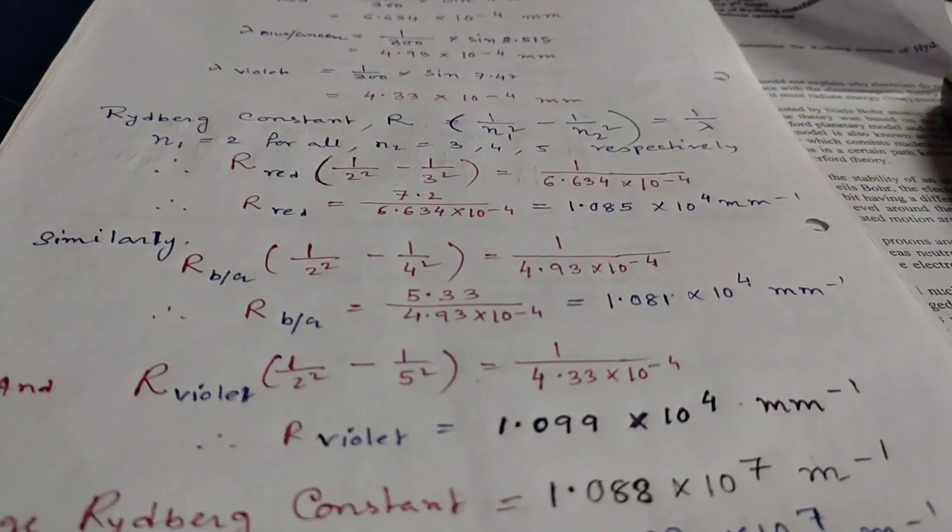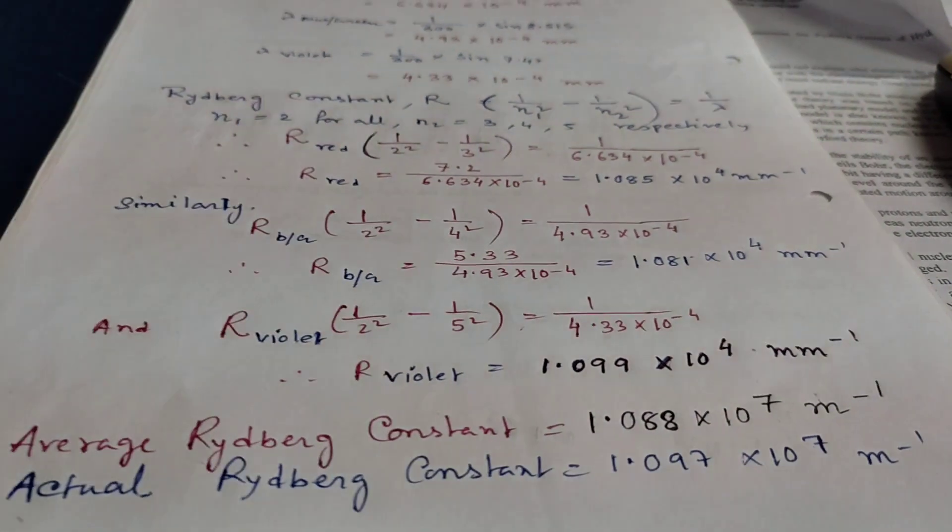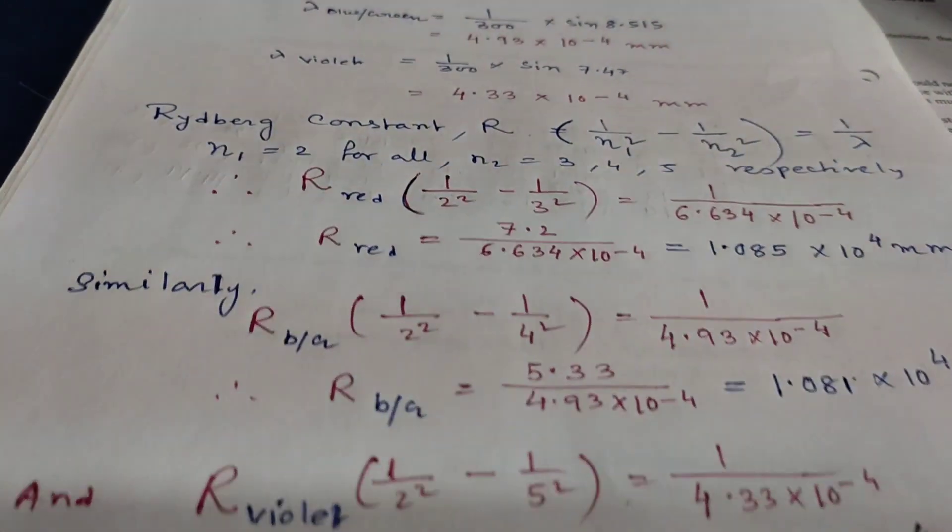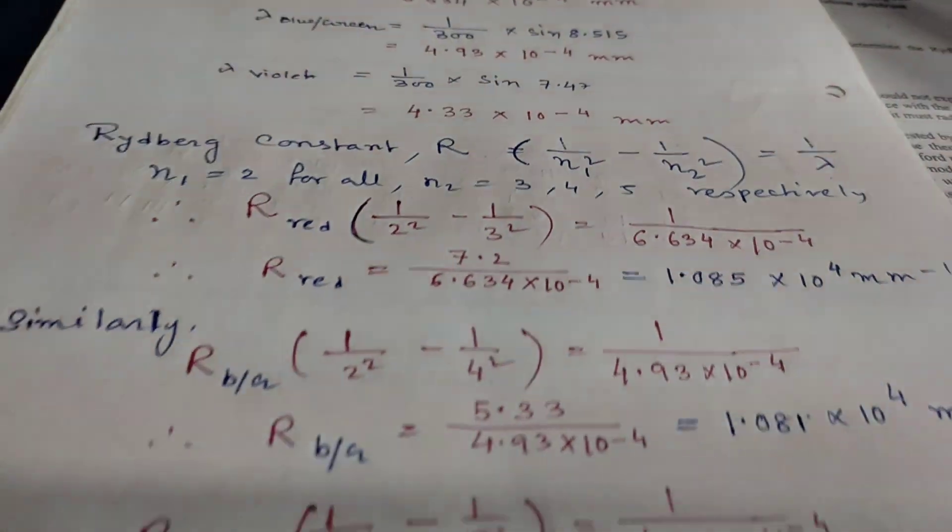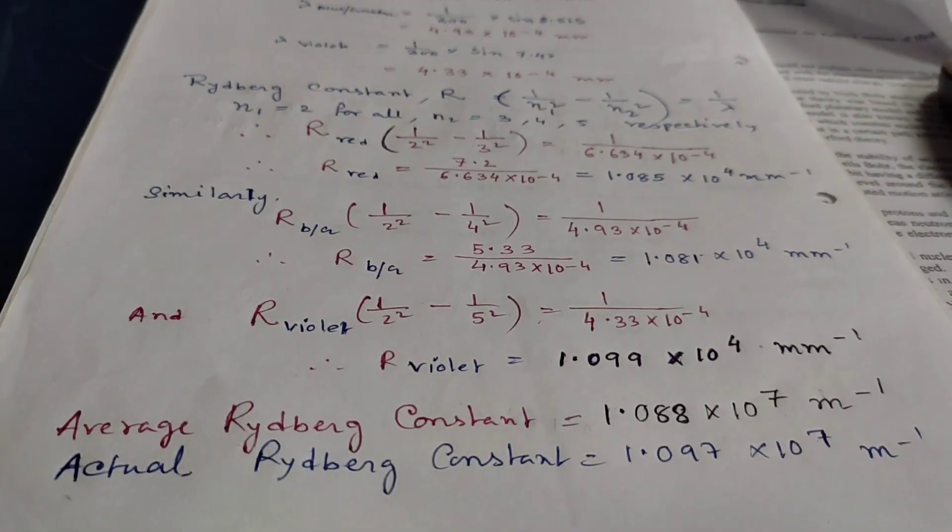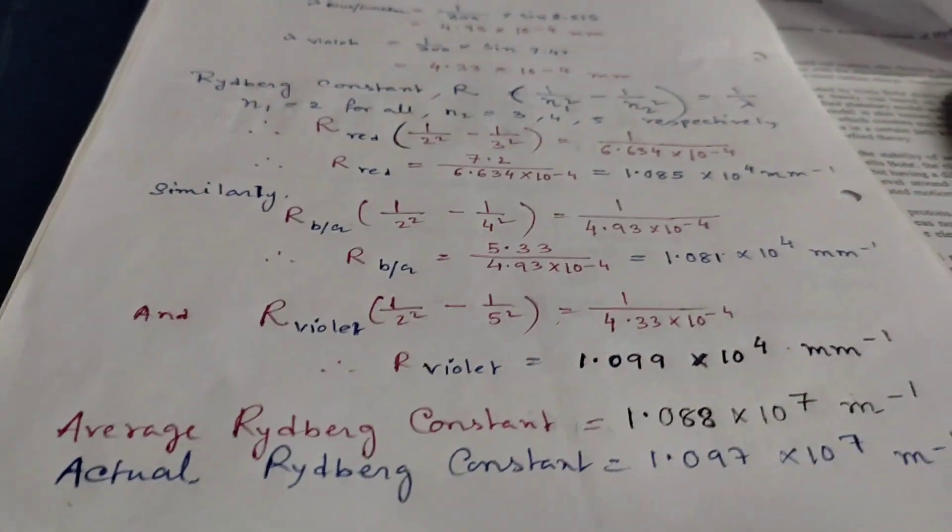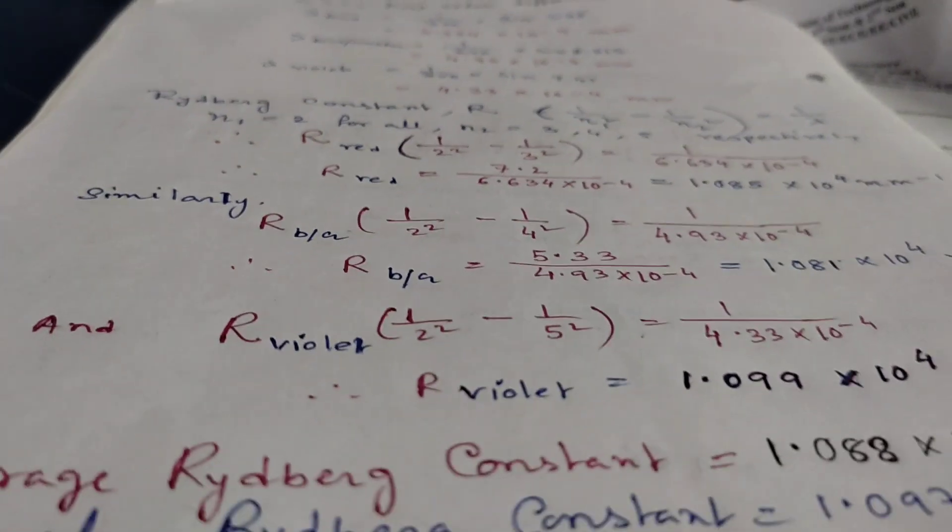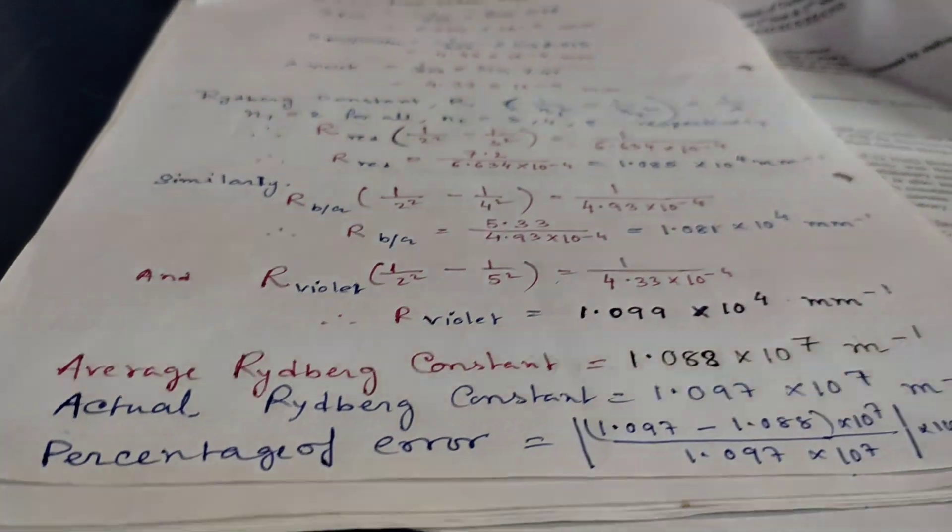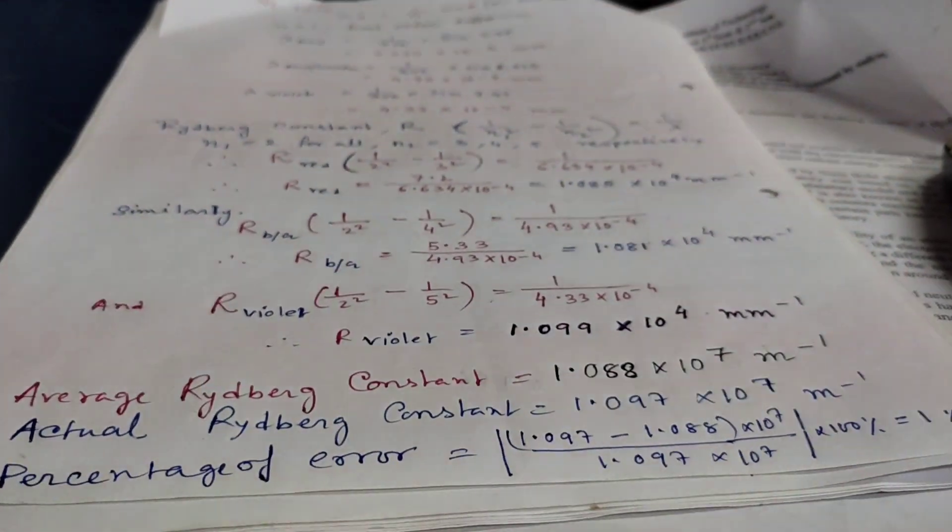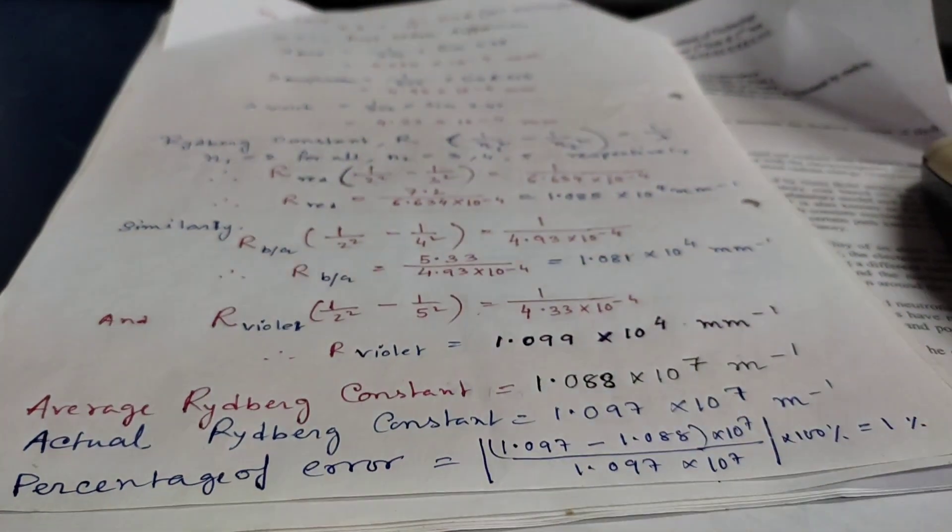Now, I will calculate Rydberg constant, that is RH. So, I am going to calculate Rydberg constant for red color, blue green and violet. Then, we are going to take average Rydberg constant. We know the actual value of Rydberg constant. So, we can easily find out the percentage of error for this experiment.